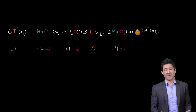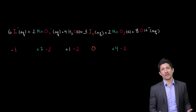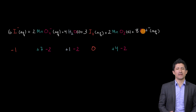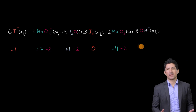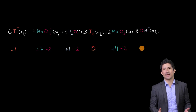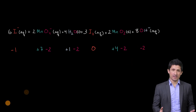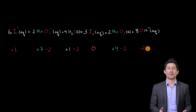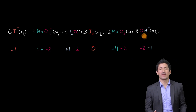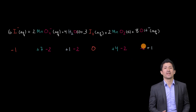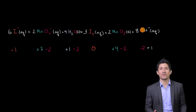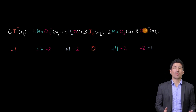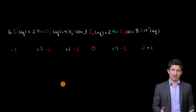Last but not least, let's look at these hydroxide anions. Each oxygen is going to have a negative two oxidation number, and the hydrogen is going to have a plus one. We can confirm that makes sense: negative two plus one is negative one for each of these ions.